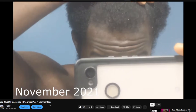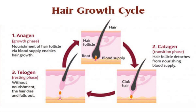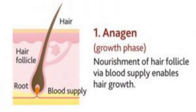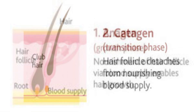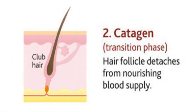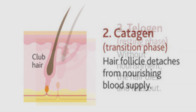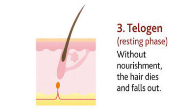Let's talk about the hair growth cycle. There are three main phases: anagen, catagen, and telogen. The anagen phase is the active growth phase of the hair follicle, which can last from two to six years. During this time, hair grows at an average rate of about half an inch per month. The catagen phase is a short transitional phase lasting about two to three weeks, in which the hair follicle detaches from the blood supply and starts to shrink. Finally, the telogen phase is the resting phase lasting about three months. After this phase, the hair will eventually shed and a new hair will start to grow from the same follicle, beginning a new anagen phase.